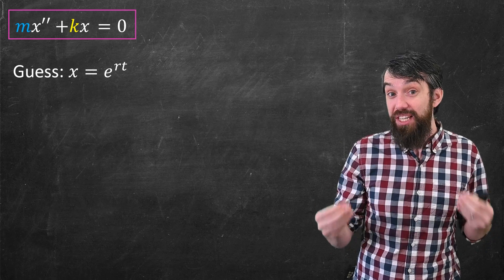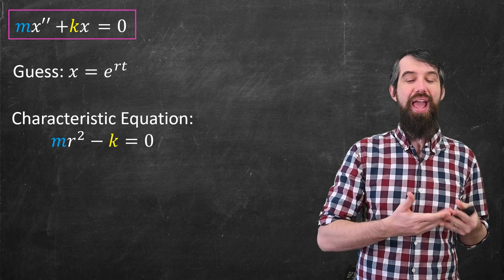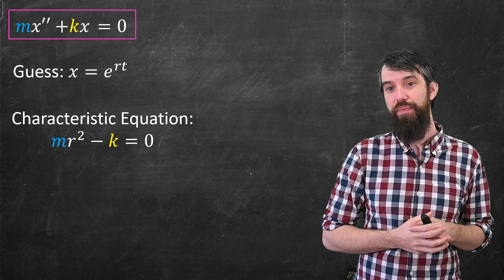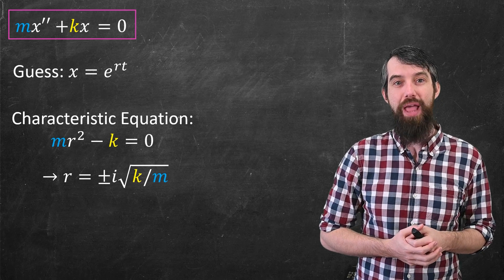I get the characteristic equation because two derivatives of e^(rt) gives me an r². So mr² - k, cancel the e^(rt)'s, it's equal to zero. And then this I can solve. This is r = ±i√(k/m).